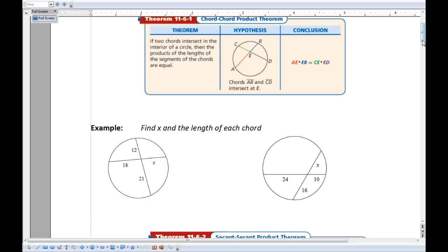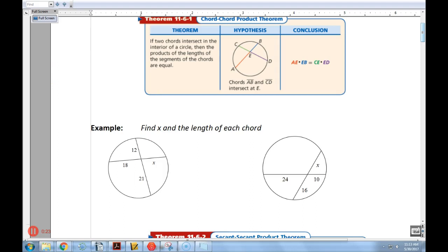The first one is called the Chord-Chord Product Theorem. Now if you remember from yesterday, yesterday we were interested in the angles and the arcs that two chords intercept. Today we want to know about the lengths of the chords. So the first theorem, the Chord-Chord Product Theorem, basically says that when you have a chord like AB right here, the distance from A to E multiplied by the distance from B to E should equal the other two pieces times together. So I like to kind of think of this one as piece times piece, equals piece times piece. That's kind of the way that I remember these ones.